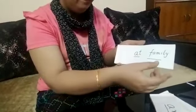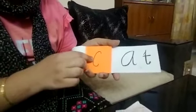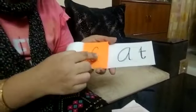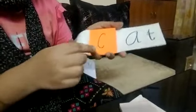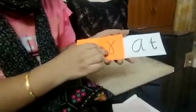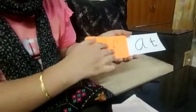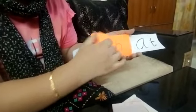This is the 'at' family. Now the child who has the concept of sounds can go about like this: cat, rat, bat, mat, fat, hat. This is for the 'at' family.